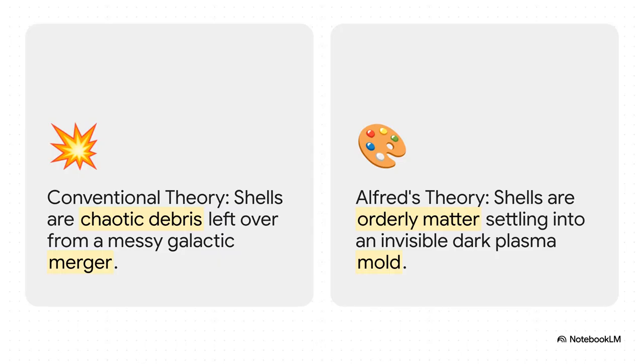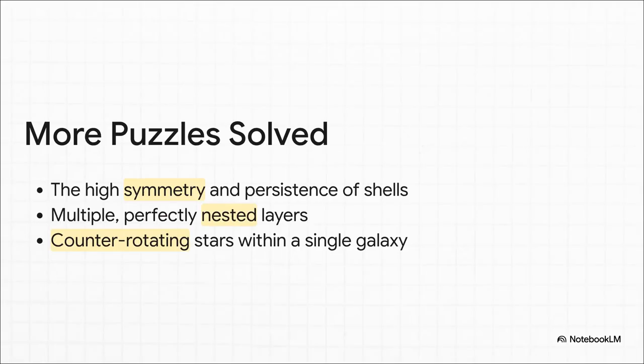And what about those eerily perfect shell galaxies? Instead of being the messy leftovers of a collision, Alfred's theory proposes a much more orderly explanation. The shells aren't debris at all. They are simply visible matter that has settled into a pre-existing invisible mold of nested dark plasma shells that were already there, sculpted by those dark currents. And this template model neatly explains why the shells are so symmetrical and why they last so long, and why we often see so many perfectly nested layers. It even has an explanation for truly bizarre observations, like stars in the same galaxy spinning in opposite directions. They're just following the gravitational pull of different dark plasma currents that happen to be counter-rotating.